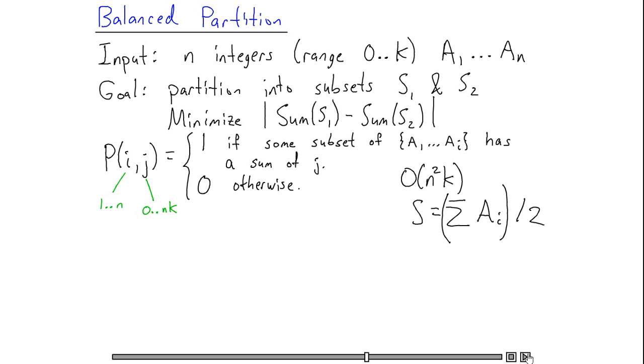So what I want to do is I want to find the minimum value of s minus i, overall i less than or equal to s, such that p of ni is 1. And all this says is, of all the possible sums i that I can get by dividing up these n numbers, I want to pick the one that minimizes the distance from s.